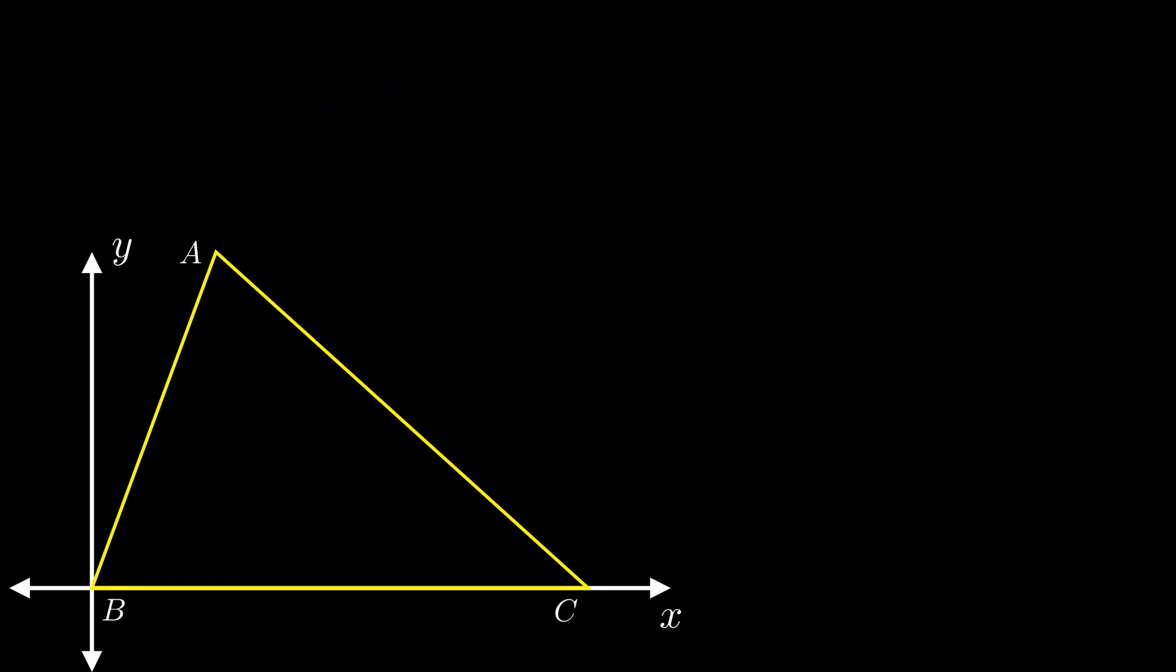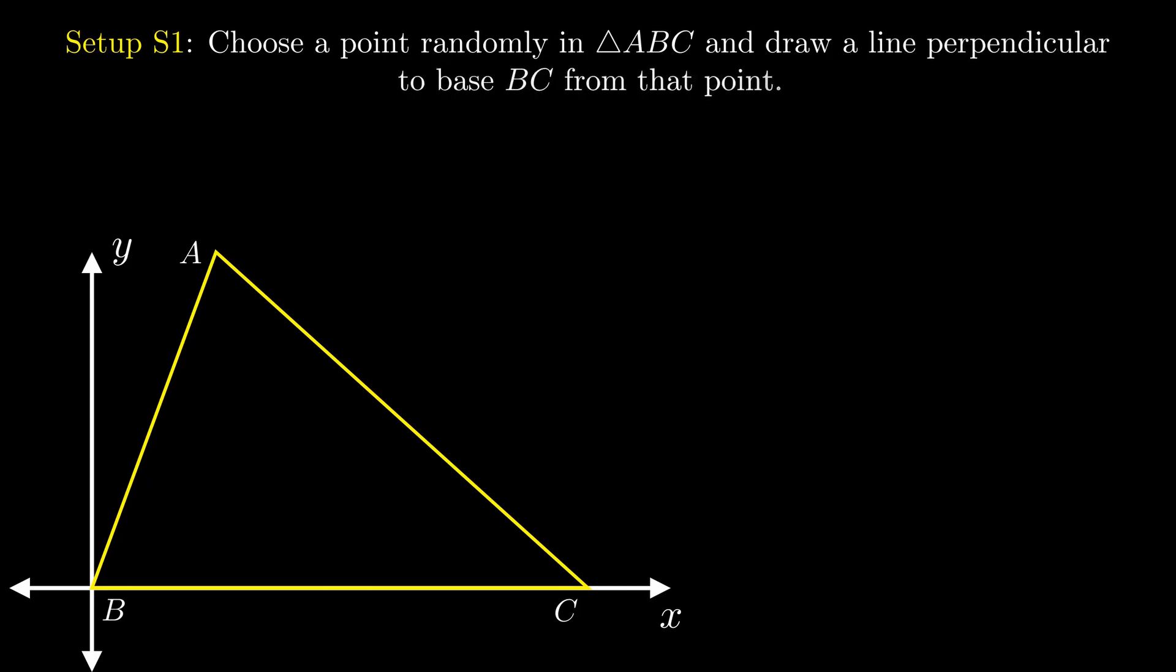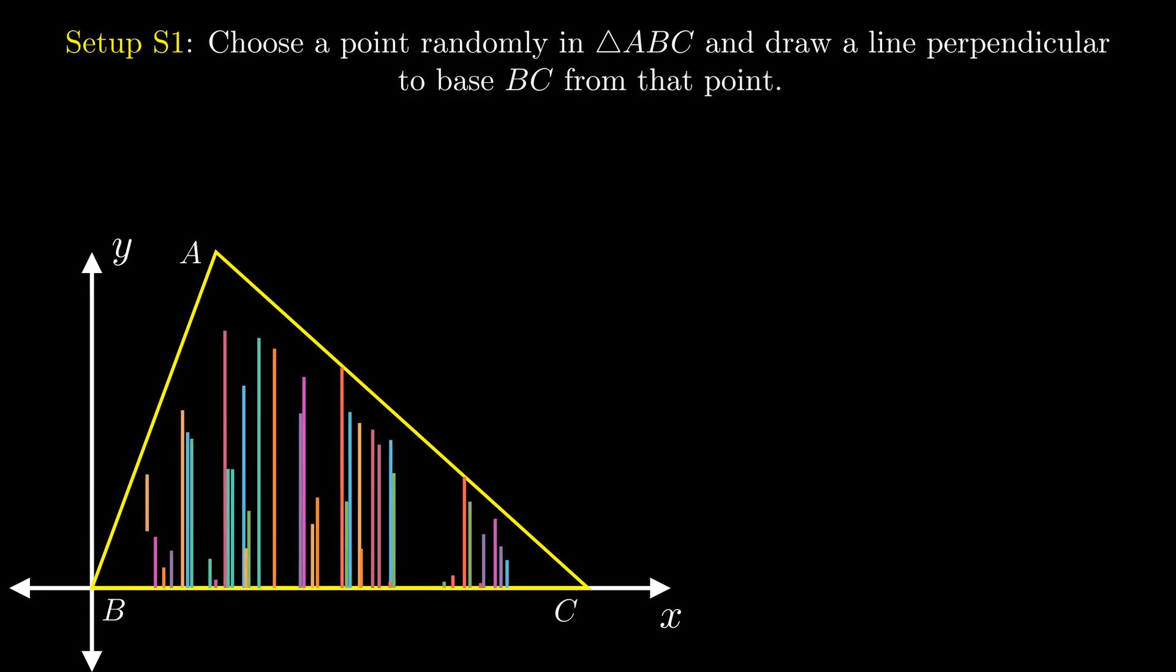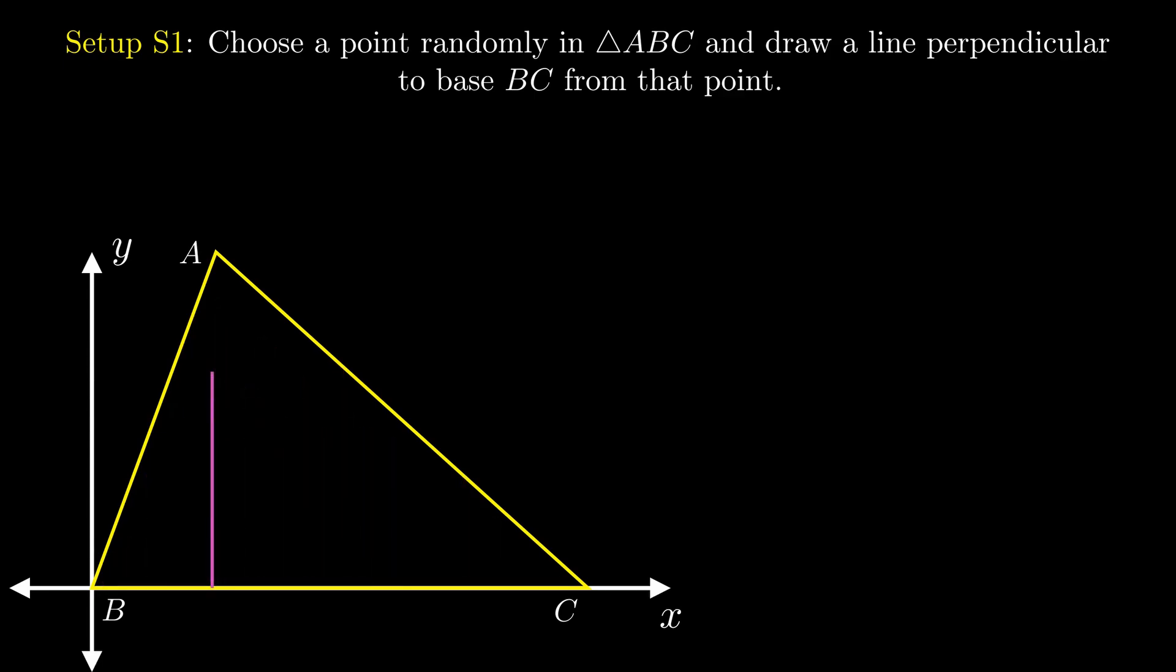As a first step, consider the same problem in a simpler setup. We choose a point randomly inside the triangle and draw a line perpendicular to the base BC from this point. We start by finding the expected length of this random perpendicular line.